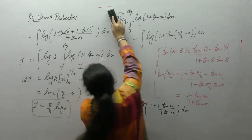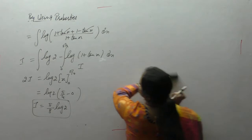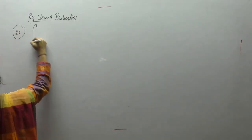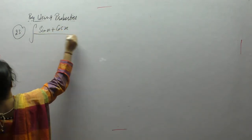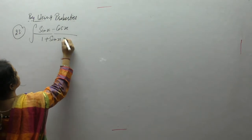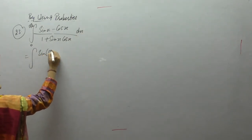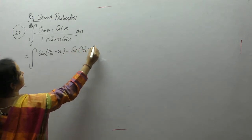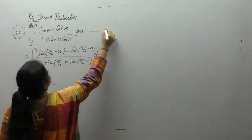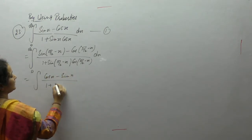Next problem: integral of (sin x + cos x)/(1 + sin x cos x) dx with limits 0 to π/2. Using King's property, replace x with (π/2 - x): sin(90° - x) is cos x, and cos(90° - x) is sin x. So we get (cos x + sin x)/(1 + cos x · sin x).